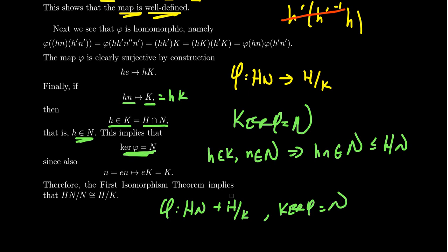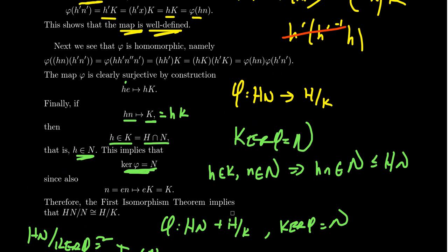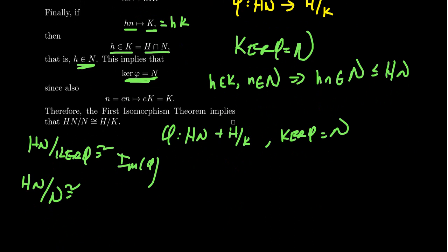By the first isomorphism theorem, since φ: HN → H/K is a surjective homomorphism with kernel N, we get HN/ker(φ) ≅ image(φ), i.e., HN/N ≅ H/K = H/(H∩N). That's exactly the left-hand side and right-hand side of the second isomorphism theorem, thus proving the theorem.